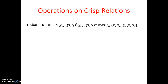The union R union S is defined such that the characteristic function χ of (R union S)(x, y) is equal to the maximum of χ_R(x, y) and χ_S(x, y). That means we take the maximum value out of relation R and relation S, and that maximum value is the value of χ_(R union S)(x, y). These things will be explained very clearly with an example.